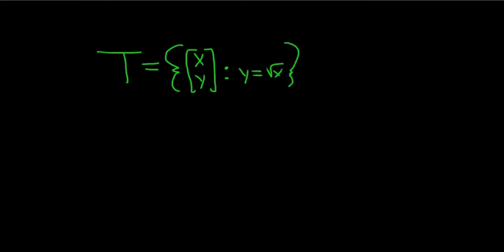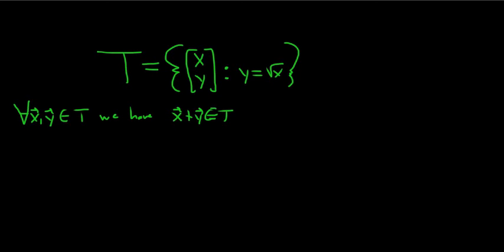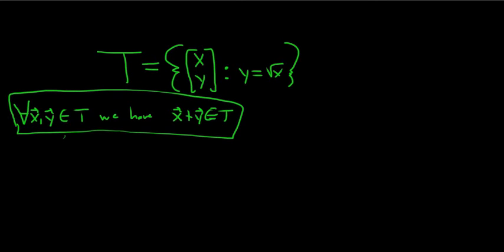So first, what does it mean for T to be closed? T is closed if for all x, y in T, we have x plus y in T. That's what it means for T to be closed. So to violate this definition, we have to show the existence of two vectors in T such that the sum is not in T. We have to come up with one example to violate this, because this has to be true for all x, y. So if it's not true even for just one pair, we've got it.